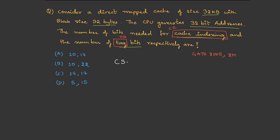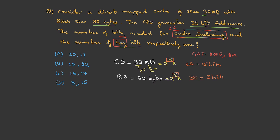Given data: cache size is 32 KB. 32 is 2^5 and K is 2^10, so cache size is 2^15 bytes, meaning we need 15 bits for cache addressing — so CA is 15 bits. Block size is given as 32 bytes = 2^5 bytes, so 5 bits are needed for block offset. Physical address is 32 bits.